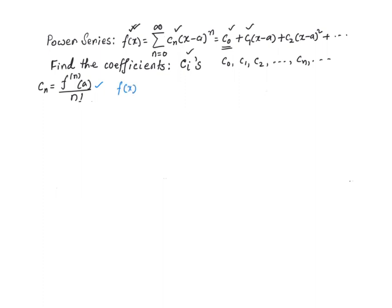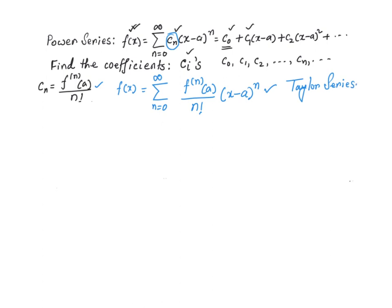Using this result, we can rewrite the power series: f of x equals the summation from n equal to zero to infinity of the nth derivative of f evaluated at a, divided by n factorial, times x minus a raised to the power n. This powerful result is called the Taylor series — the general formula for the Taylor series expansion of a function at or about a point a.